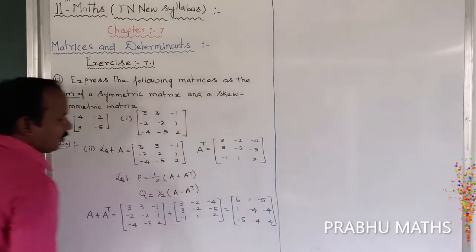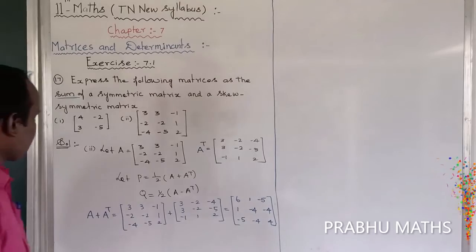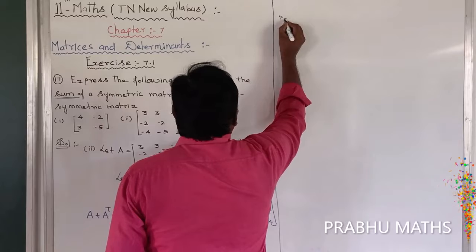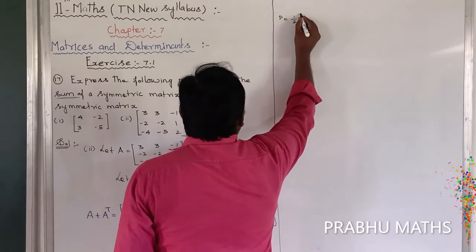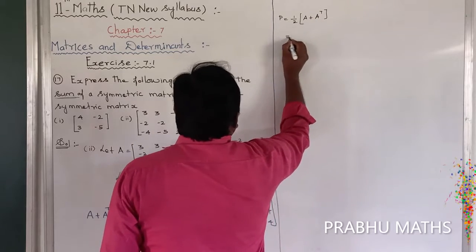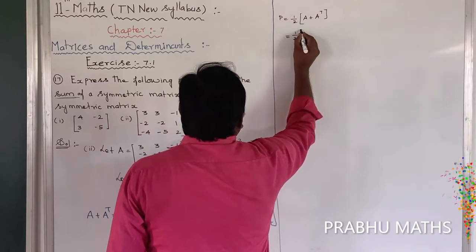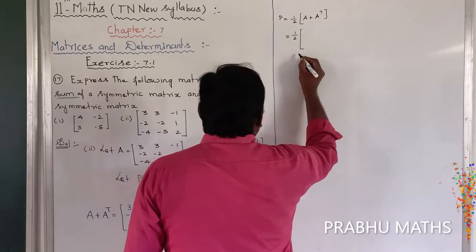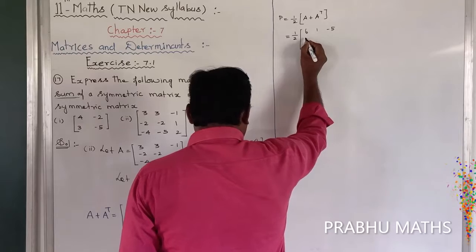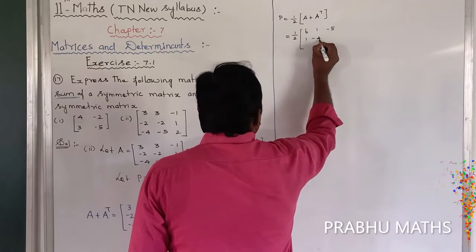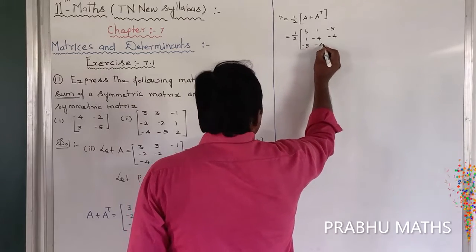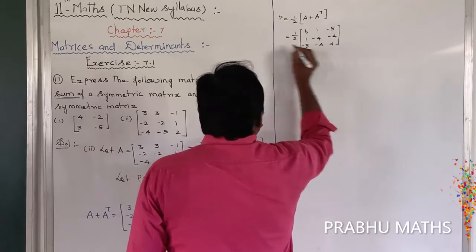That is the result of A plus A transpose. Now P is equal to 1 by 2 into A plus A transpose. So P equals 1 by 2 into the matrix: first row 6, 1, minus 5; second row 1, minus 4, minus 4; third row minus 5, minus 4, 4.